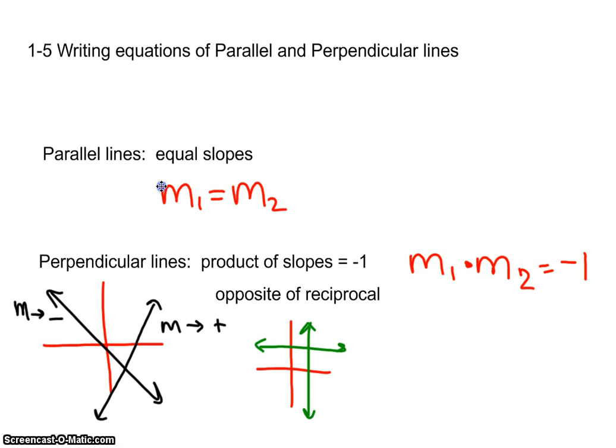Because a horizontal line, we could look at that one, you have a slope of zero. Any product involving zero is going to be zero. But again, you should recognize the idea that horizontal and vertical are always going to be perpendicular.